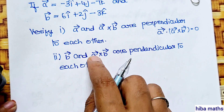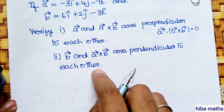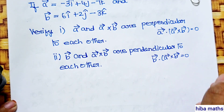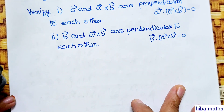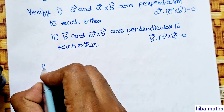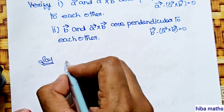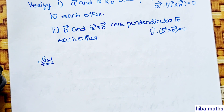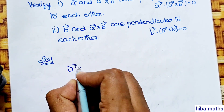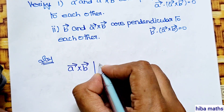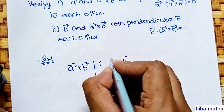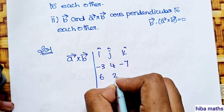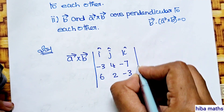Also, B vector dot A vector cross B vector is equal to 0 — prove it. So here is the solution. We will take the main value of A vector cross B vector.